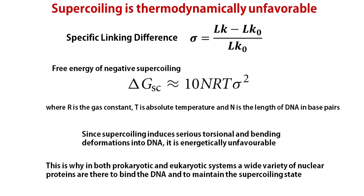Let us finish this talk by discussing some thermodynamic aspects of supercoiling. Since supercoiling induces serious torsional and bending deformations into DNA, it is energetically unfavorable. This is why in both prokaryotic and eukaryotic systems, a wide variety of nuclear proteins are there to bind the DNA and to maintain the supercoiling state. If the free energies of these protein-DNA and protein-protein interactions compensate the free energy cost of supercoiling, the structure is stable. This is the basic thermodynamic principle of chromosome formation in eukaryotes.